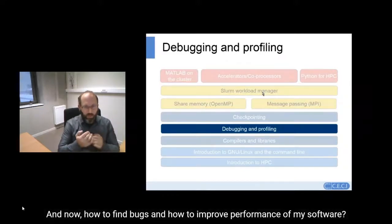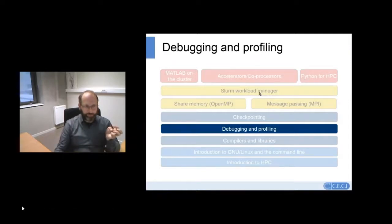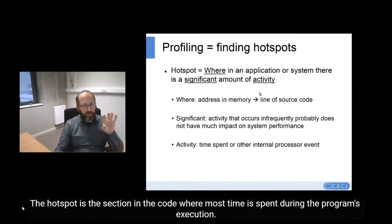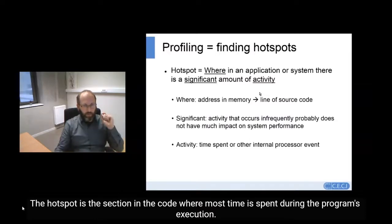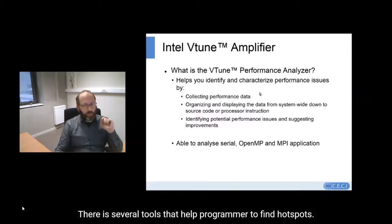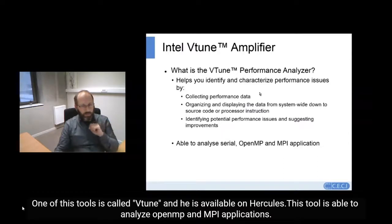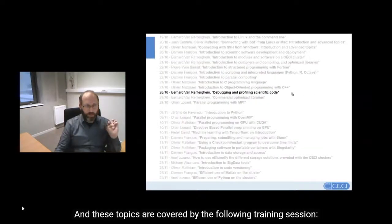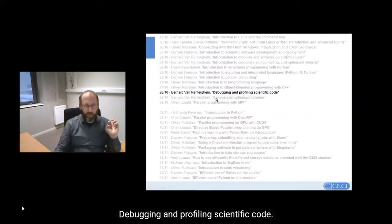How to find bugs and how to improve performance in my software? To improve the performance of an application, you first need to find the hotspots — a hotspot is a section of code where most time is spent during program execution. There are several tools that help programmers find hotspots. One of these tools is called VTune and is available on Hercules. This tool is also able to analyze OpenMP applications. These topics are covered by the training session on debugging and profiling scientific code.